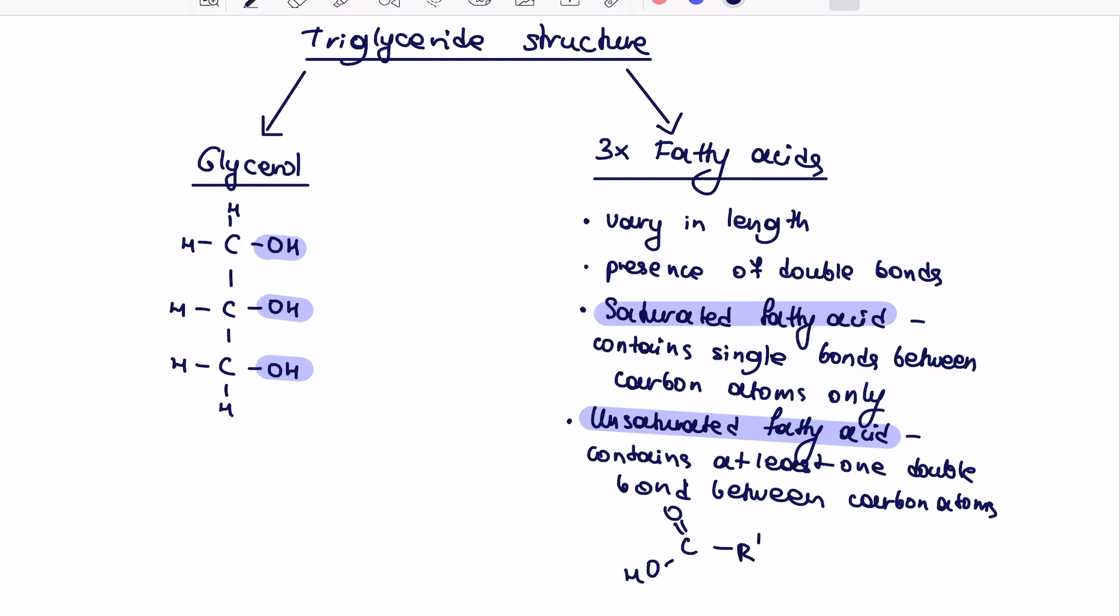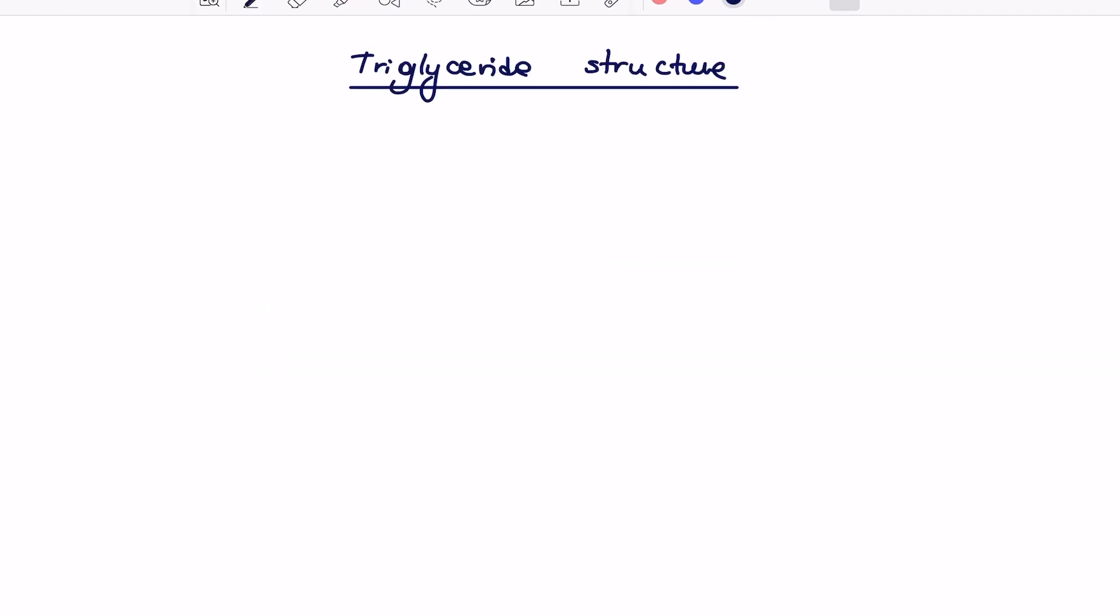The rest of the fatty acid structure contains CH2s and CH3s, as I will draw on the next page now. So how do we actually combine three fatty acids together with glycerol? I'm just going to draw glycerol over here. The more you draw this out, the easier it will be to remember.